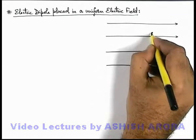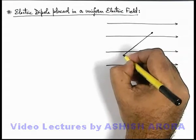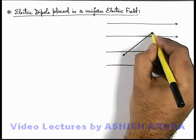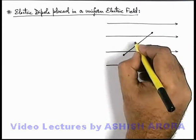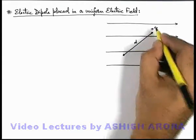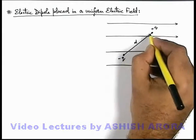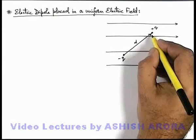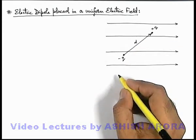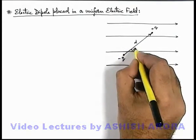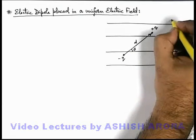And here if we place a dipole, for understanding in sake of simplicity I am drawing an enlarged view of a dipole. Say this is plus q and this is minus q charge and this is the direction of dipole moment, which is placed and dipole moment is making an angle theta with the direction of electric field vector.